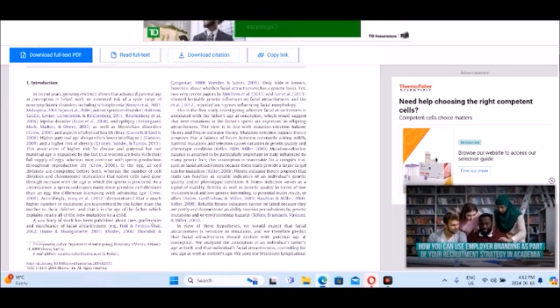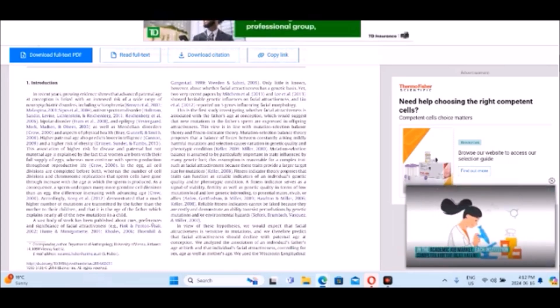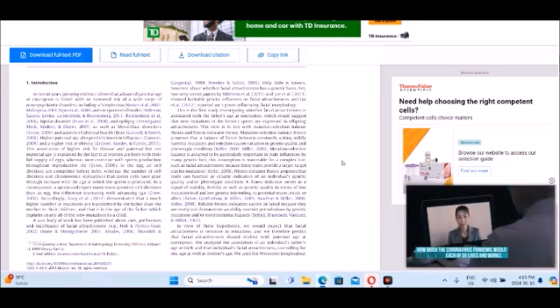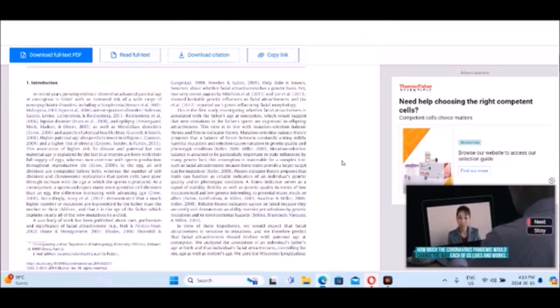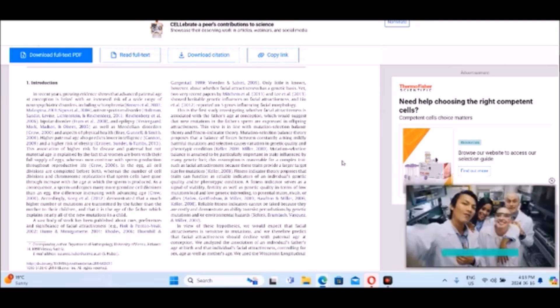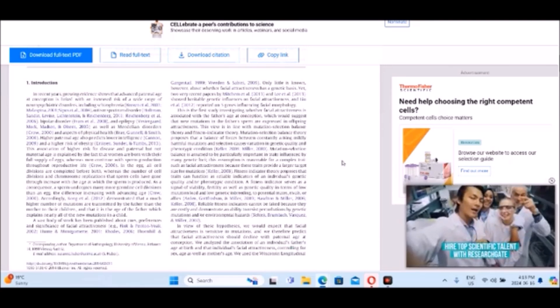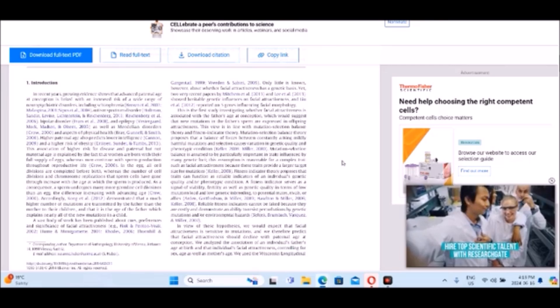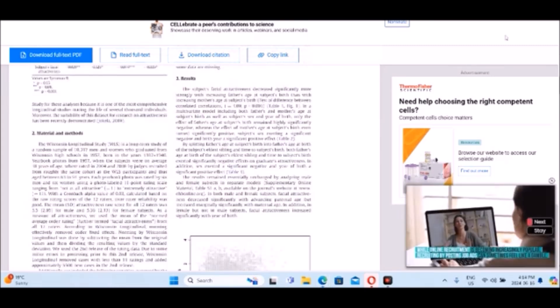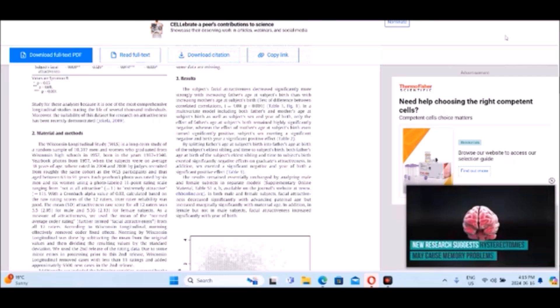It was demonstrated that a much higher number of mutations are transmitted by the father than the mother to their children, and that it is the age of the father, which explains nearly all of the new mutations in a child. A vast body of work has been published about cues, preferences, and significance of facial attractiveness. Only little is known about whether facial attractiveness has a genetic basis, yet two very recent papers showed heritable genetic influences on facial attractiveness. We would expect that facial attractiveness is sensitive to mutations, and we therefore predict that facial attractiveness should decline with parental age at conception. The result was that the subject's facial attractiveness decreased significantly more strongly with the increasing father's age at subject's birth than with the increasing mother's age at subject's birth.